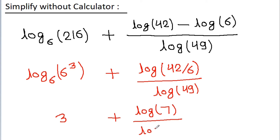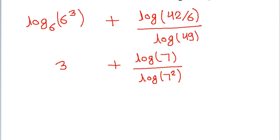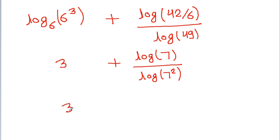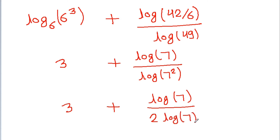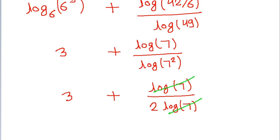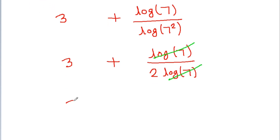From here we can write it as 3 minus log 7 divided by log 7 squared, which is 2 times log 7. The log 7 terms cancel, and we get 3 plus 1/2, or equivalently 7/2.